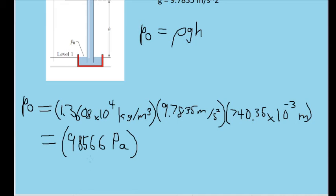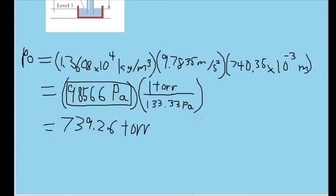Now, the problem asks us to find the pressure in both pascals and torr, so let's do a conversion. Since there are 133.33 pascals in one torr, we end up with, rounded to five significant figures again, 739.26 torr.